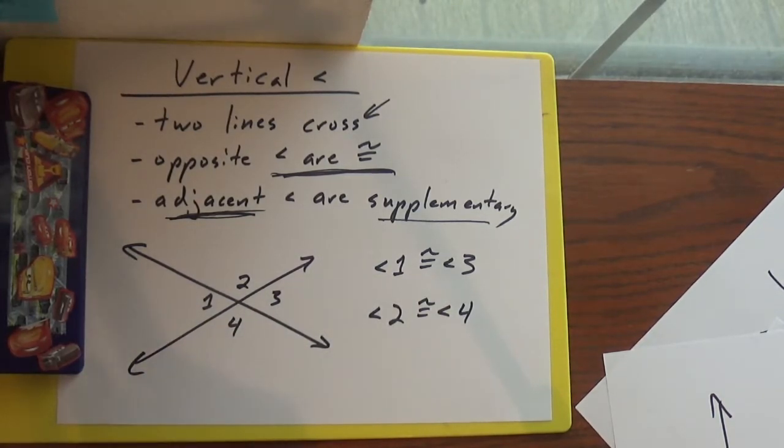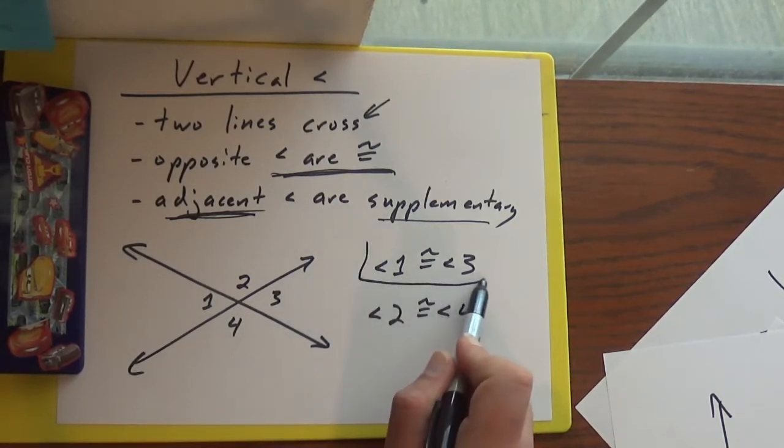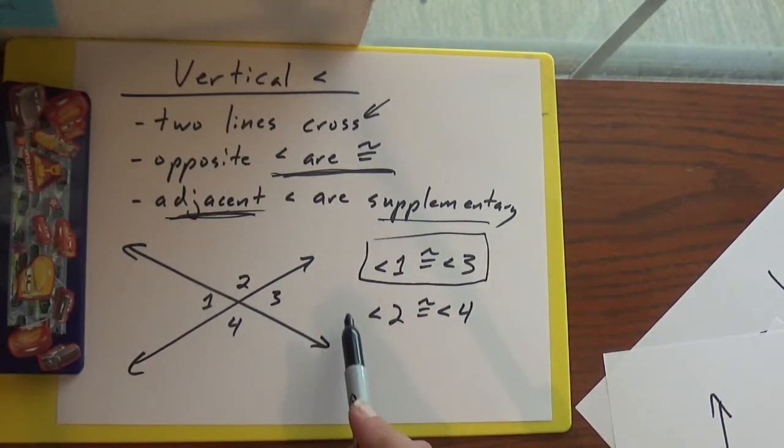And opposite angles are equal. So that means in this drawing, one and three are the same. And two and four are the same.